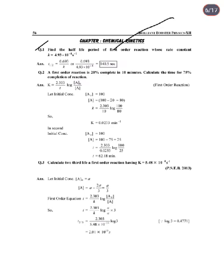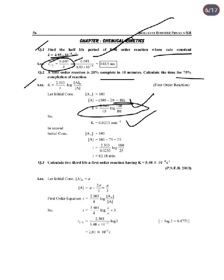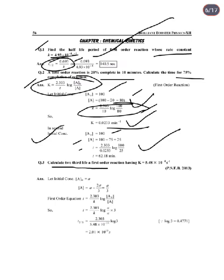Next chapter: Chemical Kinetics. Numerical: Find the half-life period of a first-order reaction whose rate constant k = 4.93 × 10⁻⁴ s⁻¹. Using t₁/₂ = 0.693/k, we get t₁/₂ = 1405 seconds. Second question: If a first-order reaction is 20% complete in 10 minutes, calculate the time for 75% completion. Using k = 2.303/t × log(a₀/a), find k first, then t = 62.18 minutes.